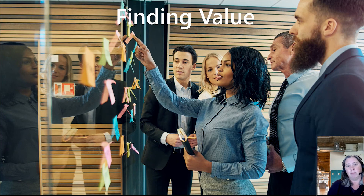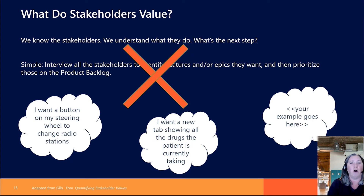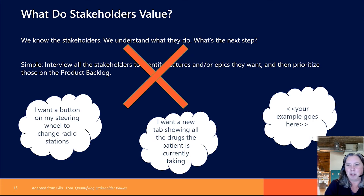Once we know our stakeholders, it should be simple, right? We just go talk to them, get a bunch of features and epics, pop them in a product backlog and off we go. Not so fast. This is actually the really important and tricky part — people come to us with their solutions, with what they think will solve their problems. So they won't tell you their underlying goal; they'll say something like 'I want a button on my steering wheel to change radio stations,' or 'I want a tab showing all the drugs a patient is currently taking.' This isn't value yet. We're in the solution space, not the problem space.